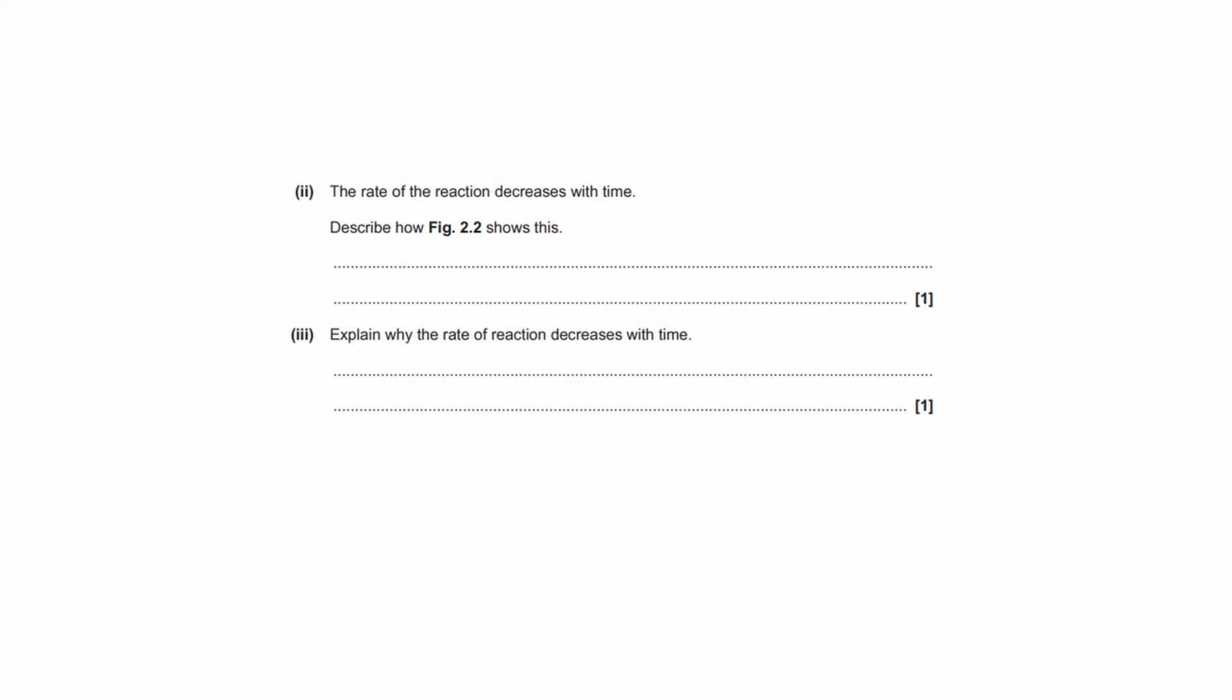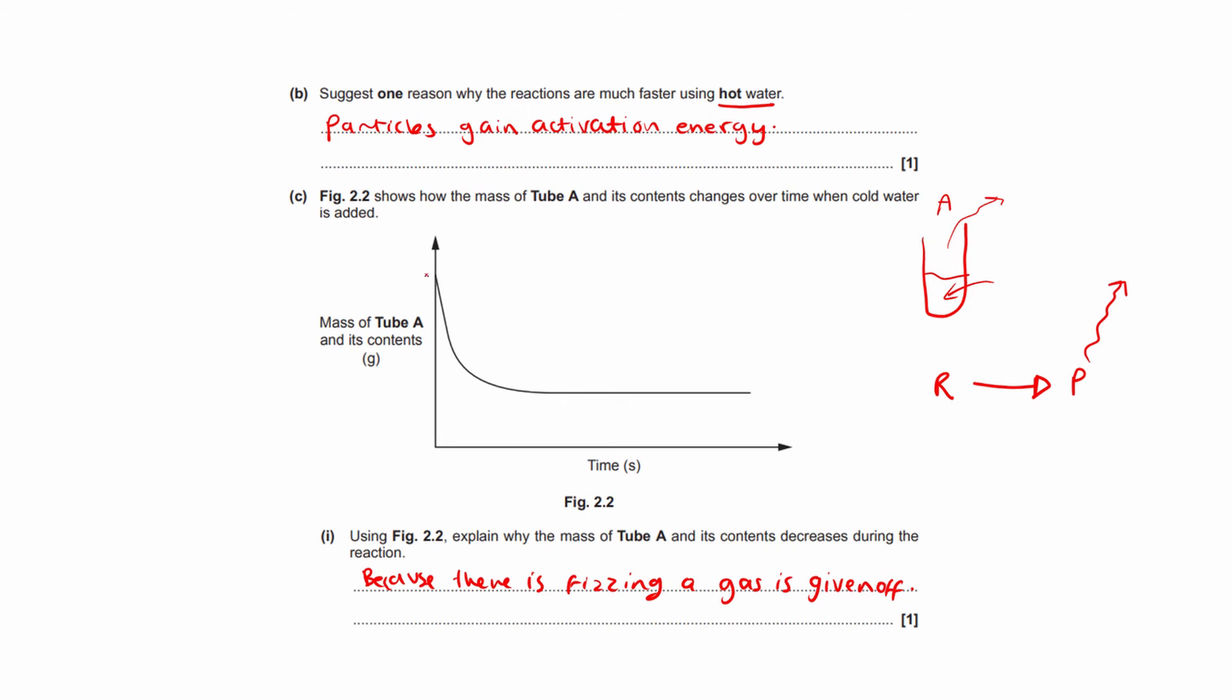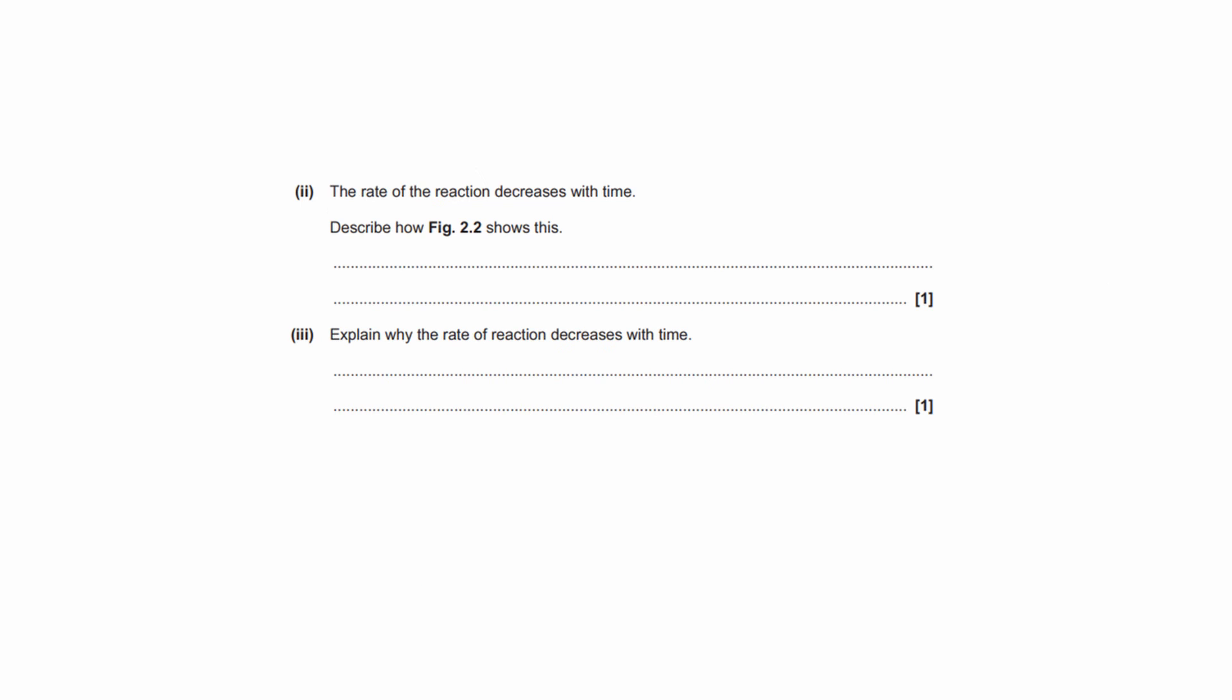Okay. Iii. Sorry, Iii. The rate of the reaction decreases with time. Describe how figure 2.2 shows this. So how does this graph tell you that the rate of the reaction is decreasing? So you just need to say that the gradient is decreasing because before we have a steep gradient. So this line, you can see, is steep first. And then as we go across, that line becomes more shallow. Okay. So the gradient is decreasing. That's why the rate is decreasing.